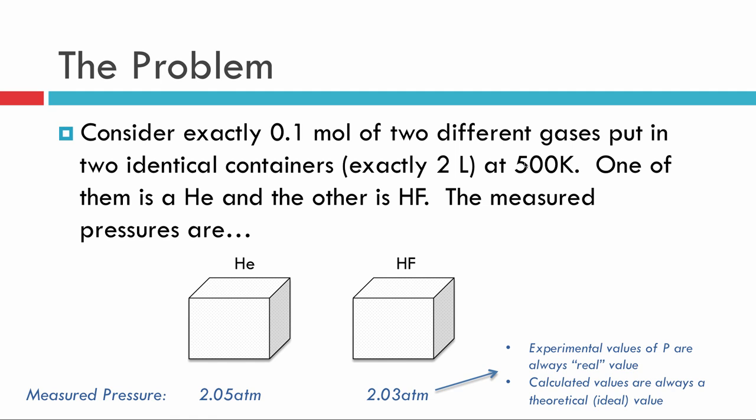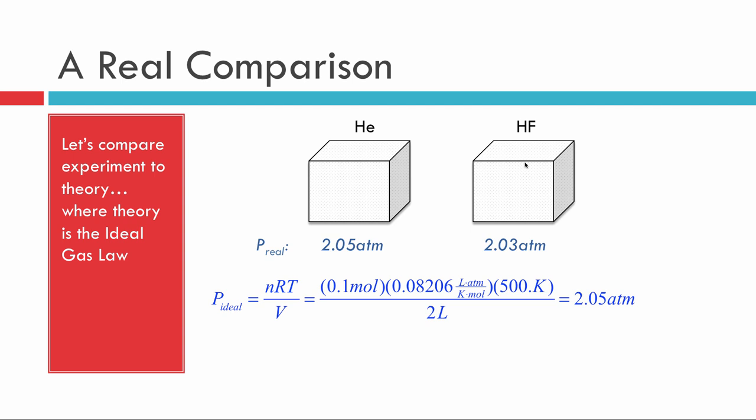Maybe we can get more out of this if we take a look and calculate what the ideal gas law predicts. So that's what I've done here. I've predicted with the ideal gas law that the pressure should be a whopping 2.05. We can immediately say that helium, with the same pressure of 2.05, is acting like an ideal gas, while the hydrogen fluoride at 2.03 atmospheres does not act like an ideal gas.